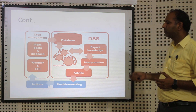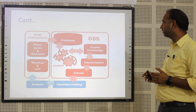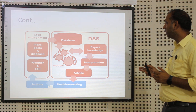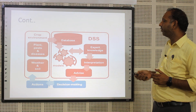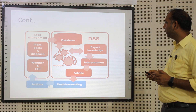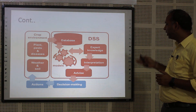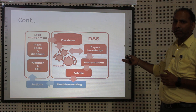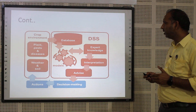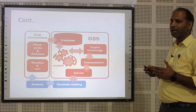This is a diagram which represents the decision support system in a crop environment. Decision-making is required in the crop system where plant, pest and disease, weather, and soil are factors, and there is also a database. DSS performs expert knowledge, interpretations, and advice, and finally supports decision making. This decision making is applied to plant, pest and diseases, weather and soil through the actions.